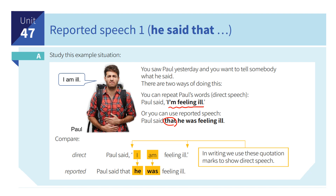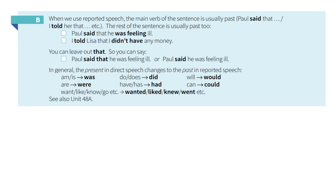Now compare the sentences. Direct: Paul said — quotation — 'I am feeling ill.' Paul himself says 'I am.' Reported: Paul said that he (Paul) was feeling ill. In writing, we use quotation marks to show direct speech. When we use reported speech, the main verb of the sentence is usually past — 'Paul said that,' 'I told her that,' etc.